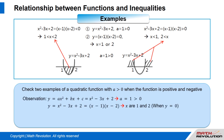y equals a times x squared plus b times x plus c equals x squared minus 3 times x plus 2, which means a equals 1, which is greater than 0.